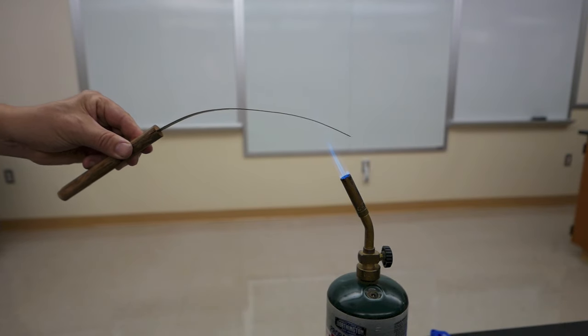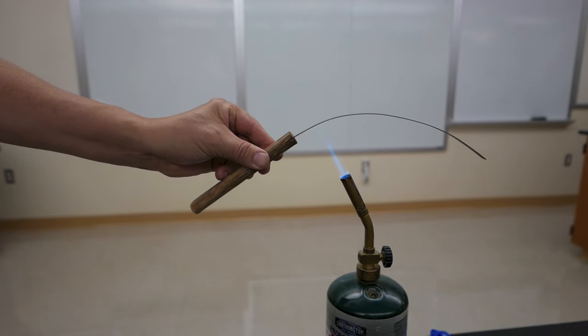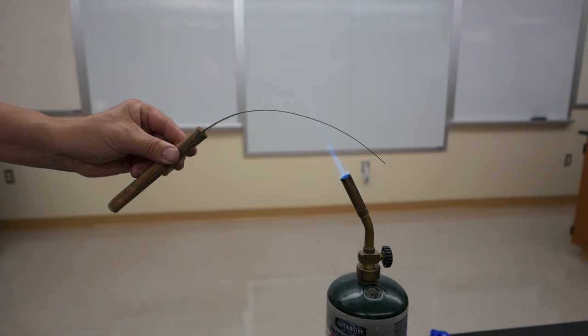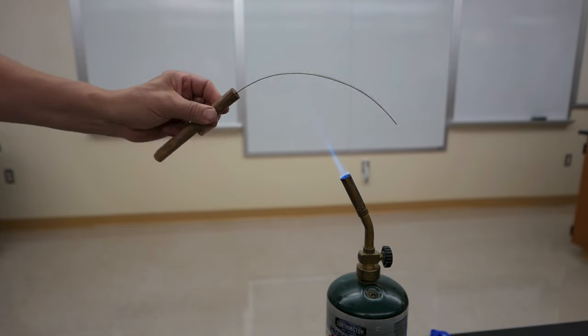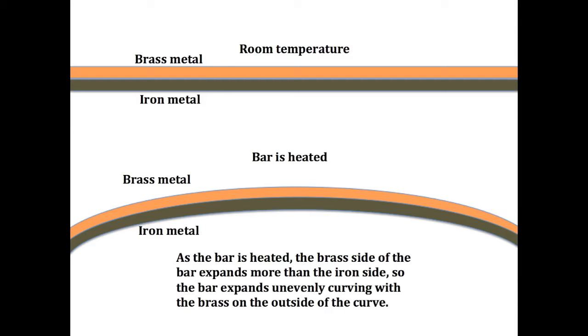You'll notice as I'm heating the bar it's starting to curve. Now why would it do this? Brass expands more than the iron does. So when the bar is heated, it expands unevenly with the brass on the outside and the iron on the inside.